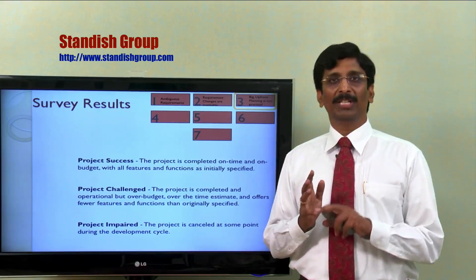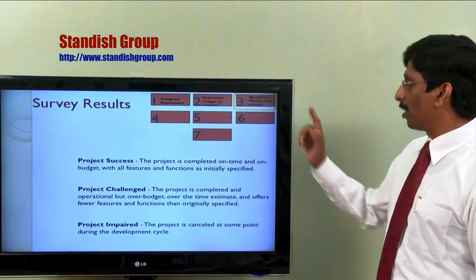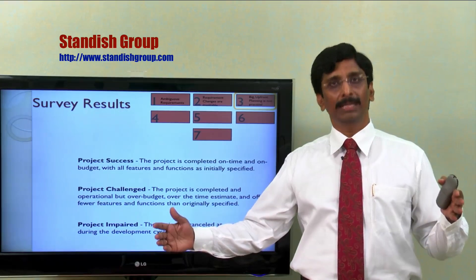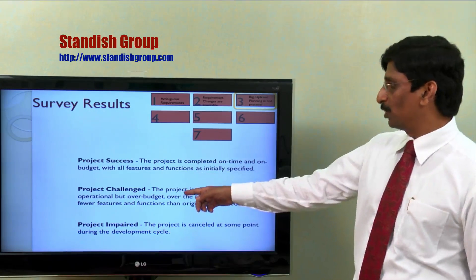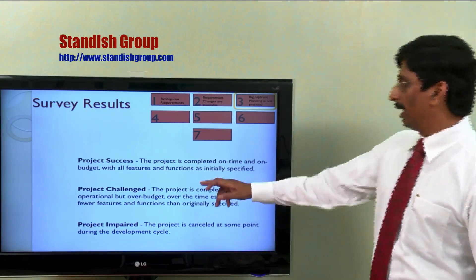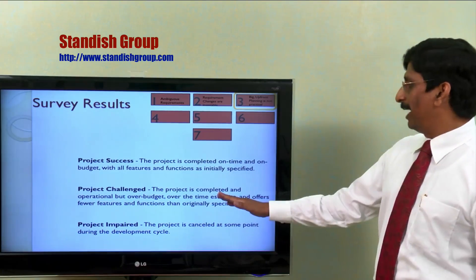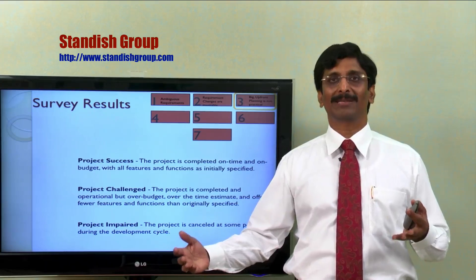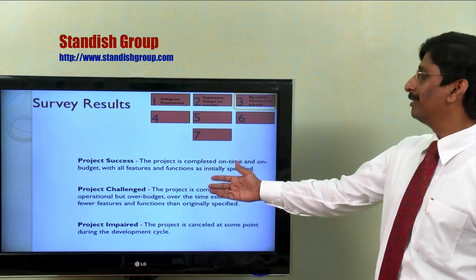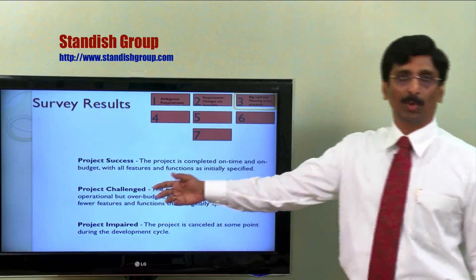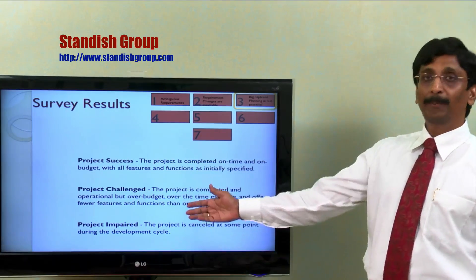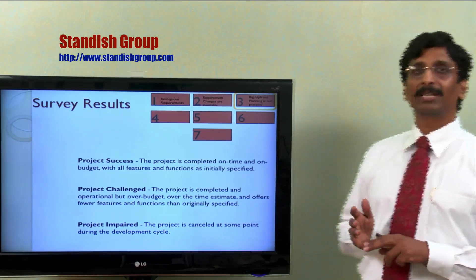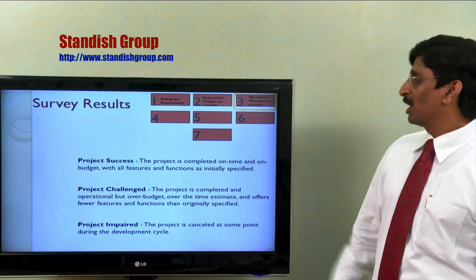After the survey, they categorized projects into three major groups. First: successful projects - completed on time and on budget with all features and functions as initially specified. Second: challenged projects - completed but over budget, behind schedule, and does not offer all features and functions originally specified. Third: impaired projects - cancelled halfway through or never reached the client.